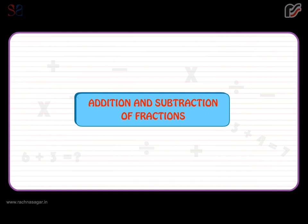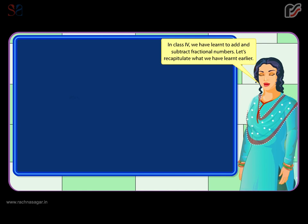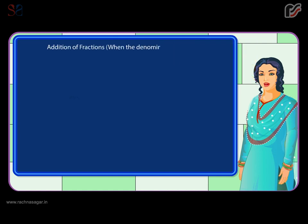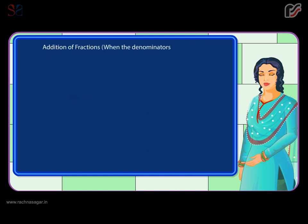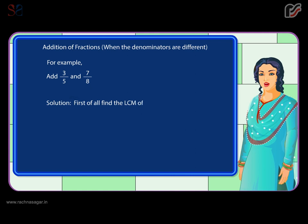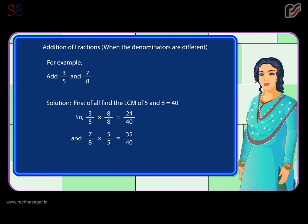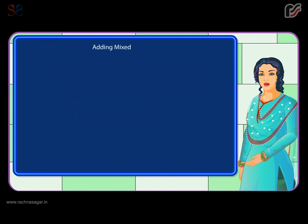Addition and subtraction of fractions. In class four we learnt to add and subtract fractional numbers. Let's recapitulate. Addition of fractions when the denominators are the same: add two by five and four by five. Two by five plus four by five equals six by five. Addition of fractions when the denominators are different: add three by five and seven by eight. Find the LCM of five and eight, which equals forty. Three by five becomes twenty-four by forty, and seven by eight becomes thirty-five by forty. Thus, twenty-four by forty plus thirty-five by forty equals fifty-nine by forty.